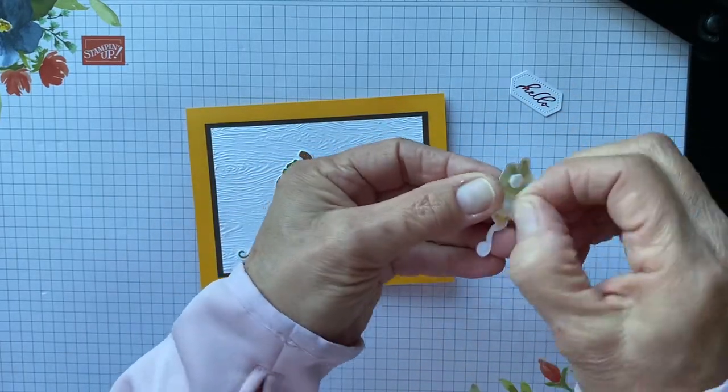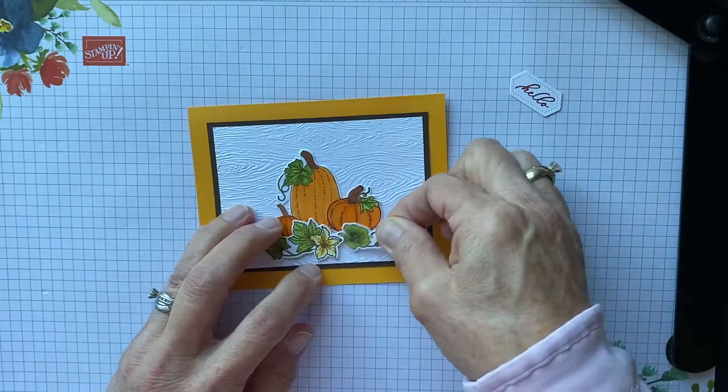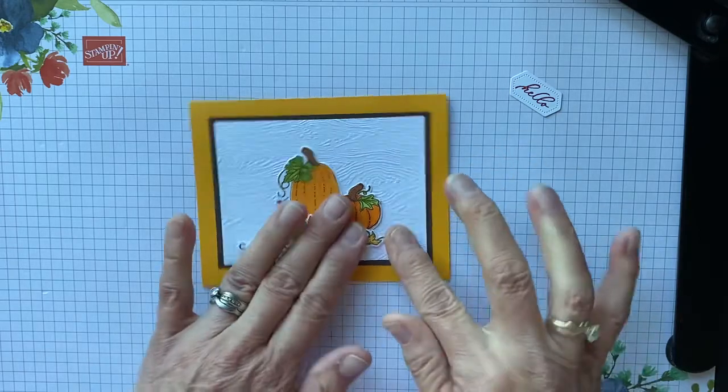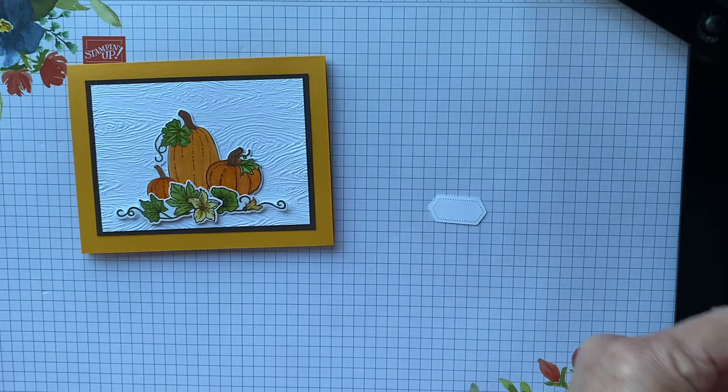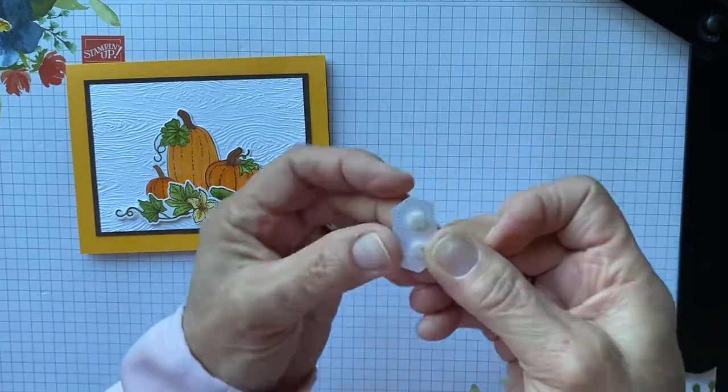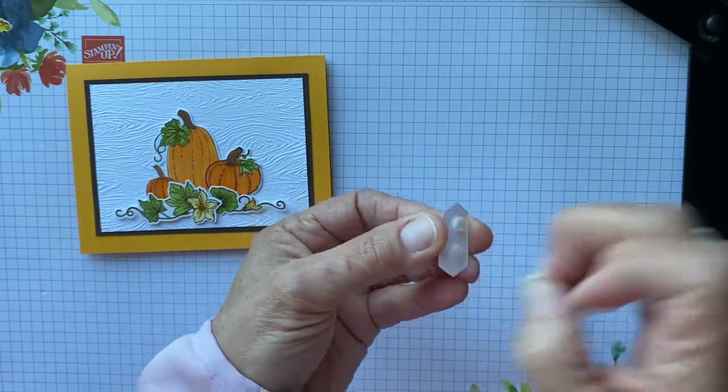Pop this one up as well, put that right under here, just like that. And then I'm going to take and pop this up with two little mini dimensionals, and that will be the front of our card. Very simple, very cute, very simple.